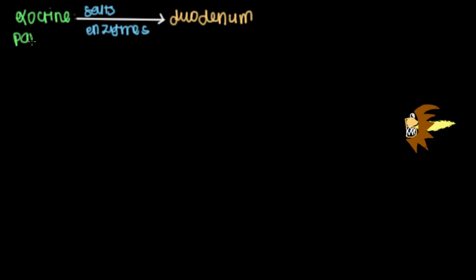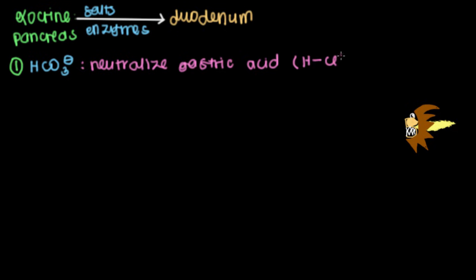The exocrine pancreas has four main roles. Firstly, because the pancreas releases its contents into the duodenum, think about what the duodenum is receiving right beforehand. As we talked about in the video on the stomach, we're getting a whole bunch of chyme that's been digested by gastric acid or hydrochloric acid. So we'll need something to neutralize all that acid. The exocrine pancreas will release bicarbonate. The bicarbonate will serve to neutralize our gastric acid. We will neutralize the pH or the very low pH that we're receiving from the stomach in the form of gastric acid. And remember, the gastric acid is hydrochloric acid.